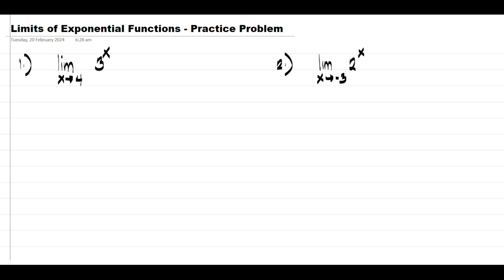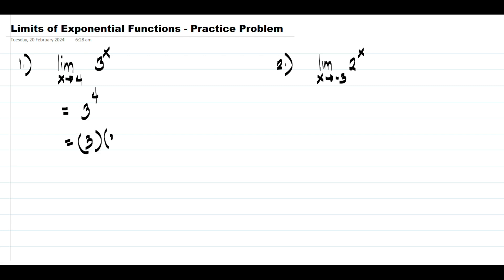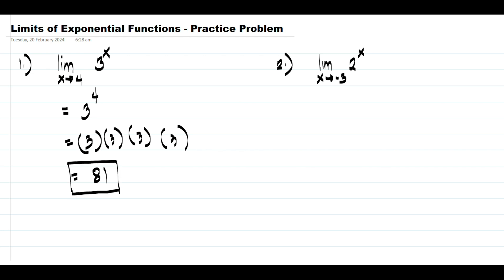To simplify, we just substitute the value of x, giving us 3 raised to 4, which is 3 times 3 times 3 times 3. That means we multiply 3 by itself 4 times, and that gives us 81. In example number two, we have the limit of 2 raised to x as x approaches negative 3.